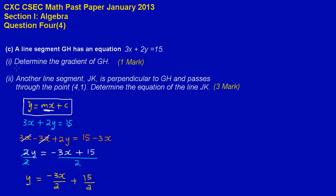So here, they ask us to determine the gradient of the line segment GH. Based on our initial equation written in general form, the gradient is m — we look at the coefficient of x. So m, which is the gradient, is equal to negative 3 upon 2, and that would be our answer for part 1.